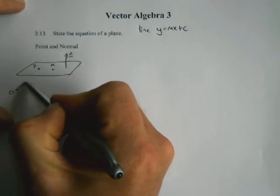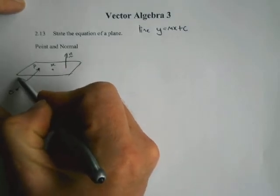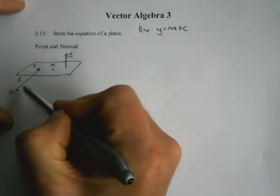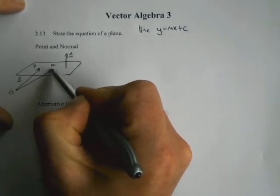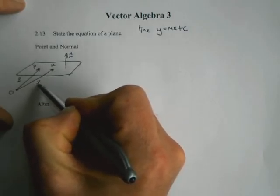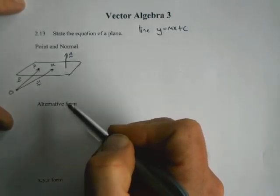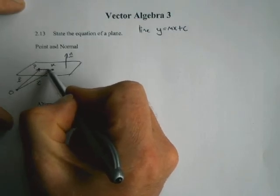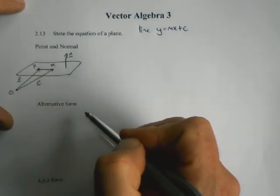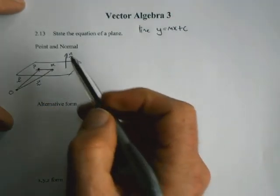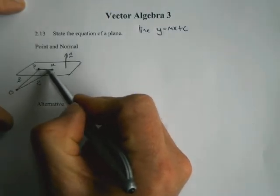And the way it works is if we have an origin, then this will be the position vector P for the point P, this will be the position vector x for the point x, and then between those two, there will be the vector which is x minus P. And as long as x minus P, this vector here, is in the plane...